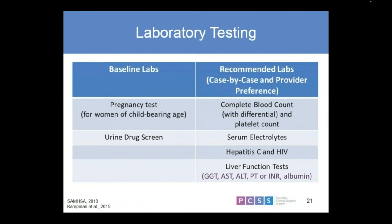Lab testing, especially at initial evaluation, can be beneficial — sometimes not done at the very first visit, but it's definitely recommended. Data helps us understand where somebody is right now and where things may be going. Things like a pregnancy test for folks able to bear children; drug screens, which are part and parcel of substance treatment; a CBC and CMP. One thing that's creeping back up more and more — especially with increased injection use — is blood-borne pathogens such as Hepatitis C and HIV.